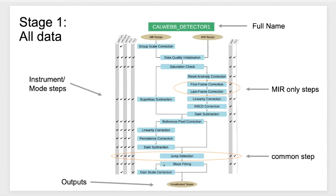Basically, stage one takes you through things like saturation checks, bias subtraction, linearity correction, dark current — all on a per-group or per-ramp basis — linearity corrections, persistence corrections, dark current, and jump detection. The final step in stage one is when you've applied all these calibrations to all the individual ramps and then do a ramp fit.